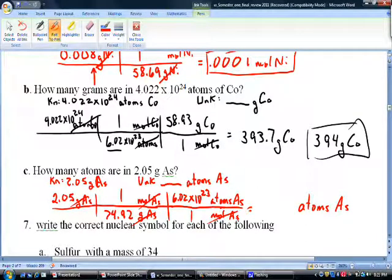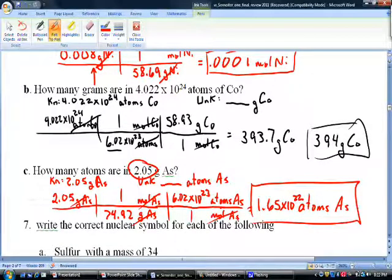Get out my calculator again and make sure it's cleared and ready. 2.05 divided by 74.92 times 6.02 times 10²³. I'm just using 6.02, the exponent, the EXP or EE key, 23 equals 1.65 times 10²². Does that 3 sig figs look right? Yeah, I have 3 sig figs here. So 1.65 times 10²² atoms of arsenic.